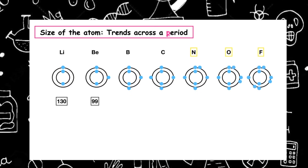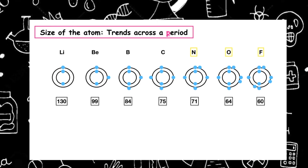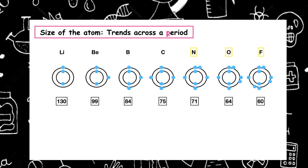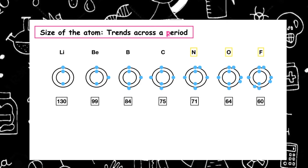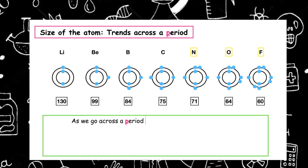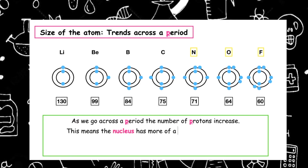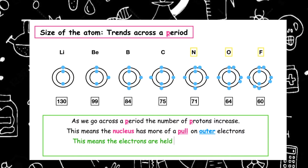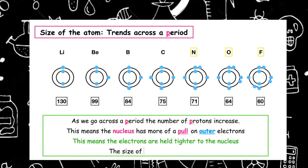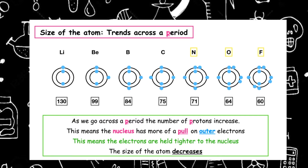If we identify the covalent radius from lithium to fluorine, we can see that the covalent radius decreases. This is because as we go across a period, the number of protons increases. This means that the nucleus has more of a pull on outer electrons, so the electrons are held tighter to the nucleus and therefore the size of the atom decreases.